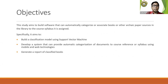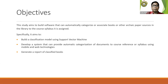The Objectives. The study aims to build software that can automatically categorize or associate books or other archived paper sources in the library to the course syllabus they are assigned. Specifically, it aims to: build a classification model using Support Vector Machine; develop a system that can provide automatic categorization of documents to course reference or syllabus using mobile and web technologies; and generate a report of classified books in the web.